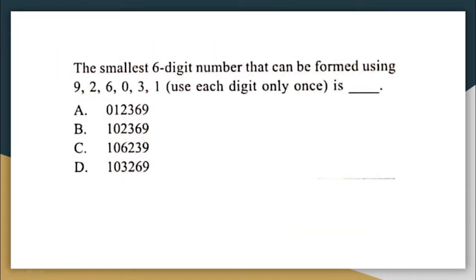Next question: the smallest six-digit number that can be formed using the digits 9, 2, 6, 0, 3, 1, using each digit only once. There are six digits. To form the smallest six-digit number, the first digit should be 1 — we cannot start with zero, as that would give a five-digit number.